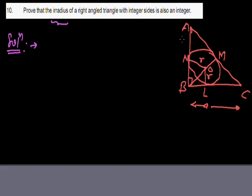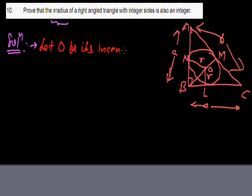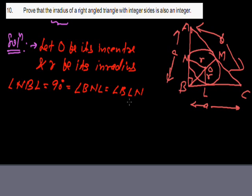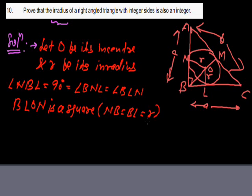Side BC = a, AB = c, AC = b. Since angle NBL = 90°, angle BNO = 90°, and angle BLO = 90°, and two sides equal R, the quadrilateral BLON is a square. Therefore NB = BL = R.